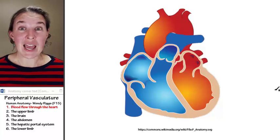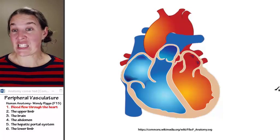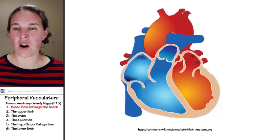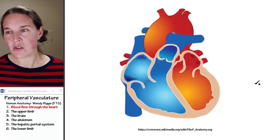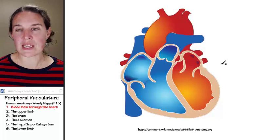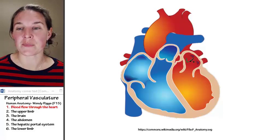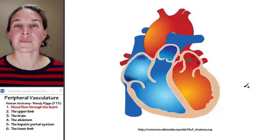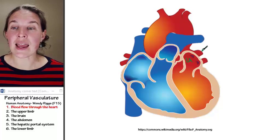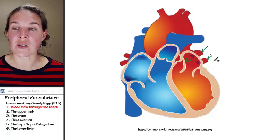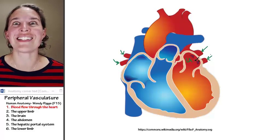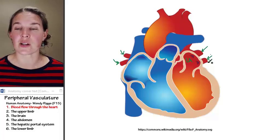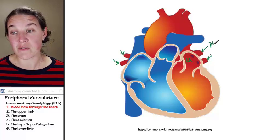Before we begin looking at all the anatomy to get us to various locations, we need to do a review of the heart, and there's a little bit of new stuff I want to bring in. I'm arbitrarily choosing to begin this conversation in the left atrium of my heart. You can see that I have actually four vessels — these are my pulmonary veins, and you already know them.